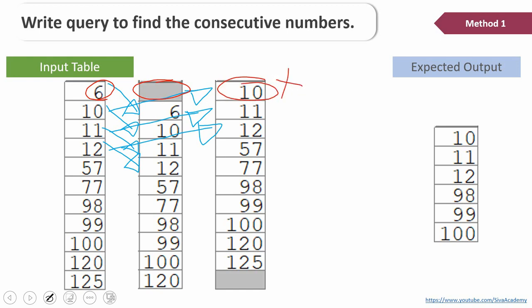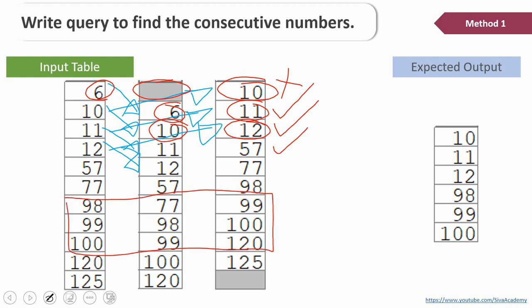So what we need to do is compare: is a given number one greater than the previous number, or one less than the next number? For example, 6 is not satisfying — the next value is 10, so 10 is not one greater than 6 — but 6 is one less than 11 (wait — 10 is one less than 11), so 10 is a valid number. Similarly, 11 is one greater than 10 as well as one less than 12, so it is also valid. Similarly, 12 is valid. In the same format, we can check 98, 99, and 100.